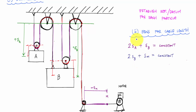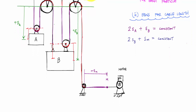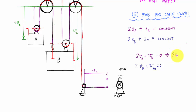Taking the time derivative of each equation gives the velocity relationships. For the first cable: 2v_A + v_B = 0. For the second cable: 2v_B + v_M = 0. Taking another time derivative gives the acceleration relationships: 2a_A + a_B = 0, and 2a_B + a_M = 0. I've used the cable length to relate the velocities and accelerations of the particles to the motor.